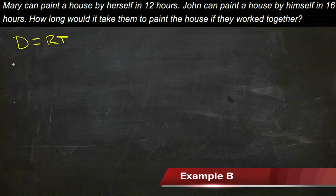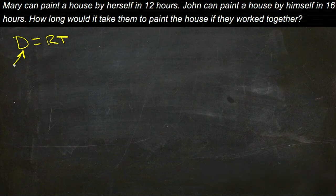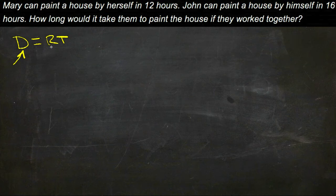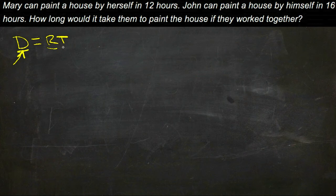In this case, our distance is a house. It's the amount of house that gets painted, going from no distance at all to completed distance, which would be a painted house. What we're looking for here is to paint a whole house. We need to find Mary's rate and John's rate. So rate is what's missing. We have that we need one whole house, so our distance will be one, and our time is how long it takes them to paint the house.